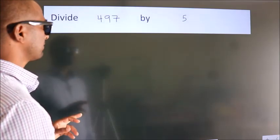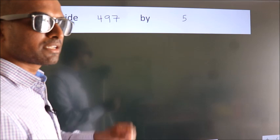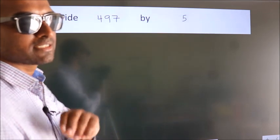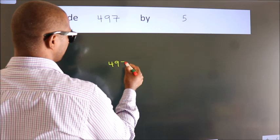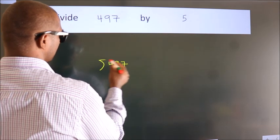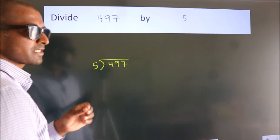Divide 497 by 5. To do this division, we should frame it in this way: 497 here, 5 here. This is your step 1.